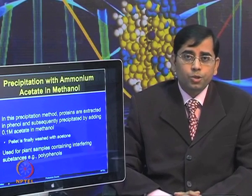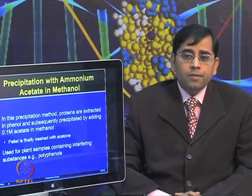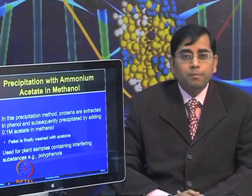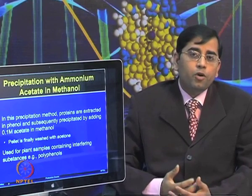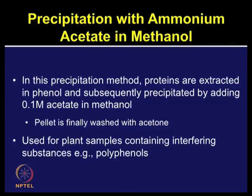A less commonly used method is precipitation with ammonium acetate in methanol, more commonly used for plant samples which are rich in polyphenols and other interfering substances. Proteins are extracted in phenol and subsequently precipitated by addition of 0.1 molar ammonium acetate in methanol. The pellet can be washed by adding acetone. For some specific applications, people try different precipitation and washing steps.